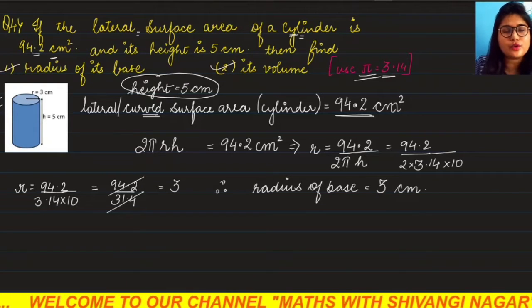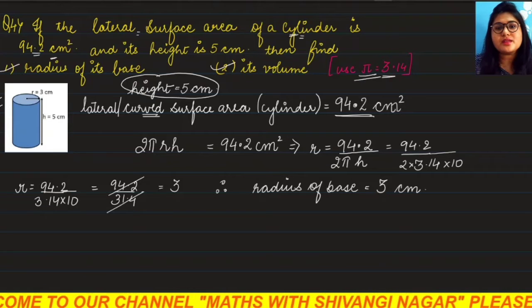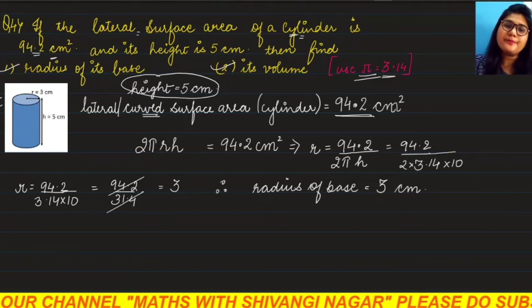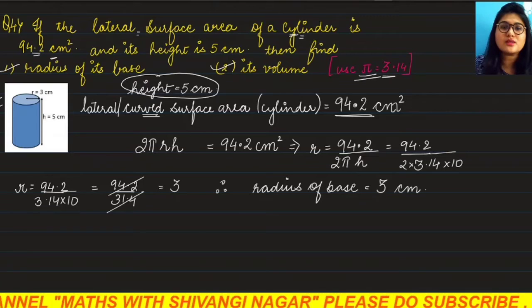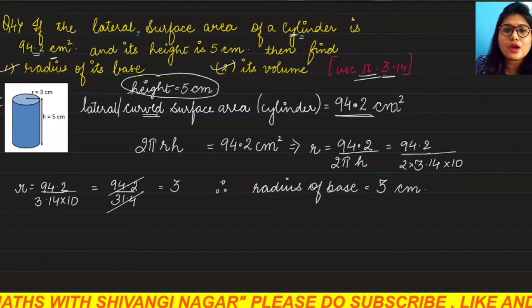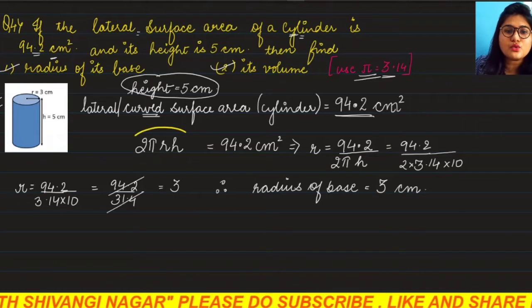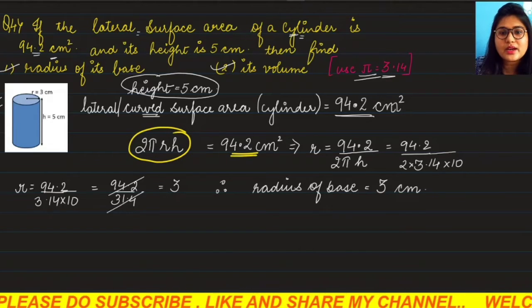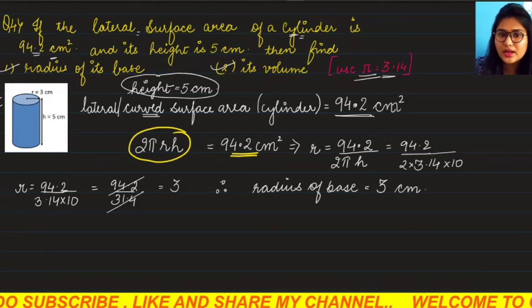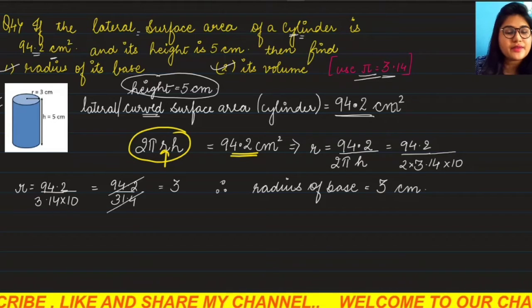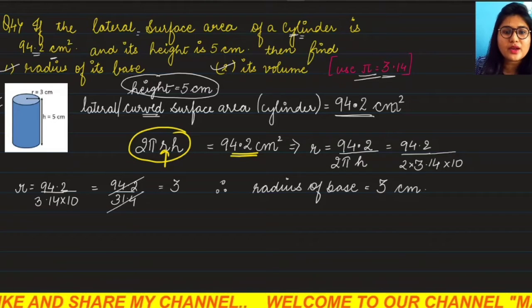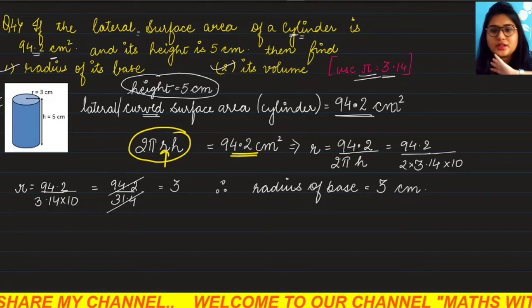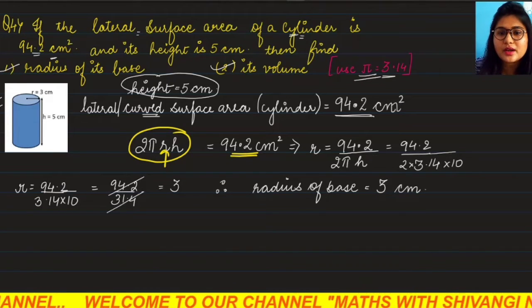So curved surface area - what is the formula? The formula of the curved surface area is 2πrh, which equals 94.2 cm². Since we have to find radius, we have to transpose 2π and h to the right side. So r equals 94.2 divided by 2πh.